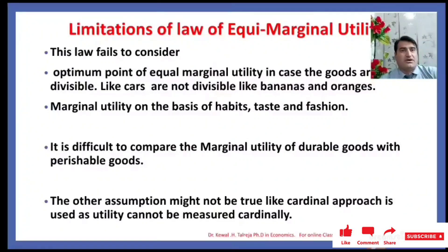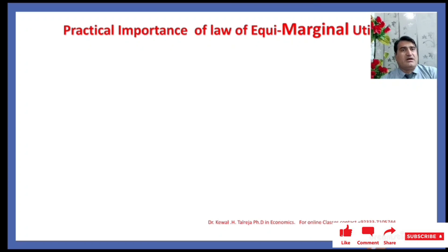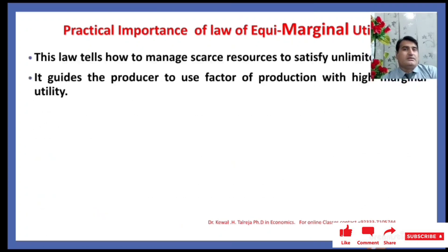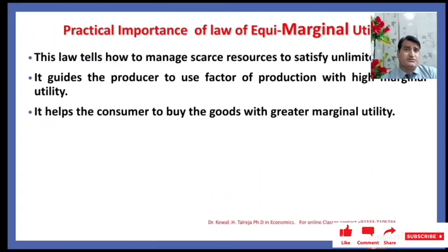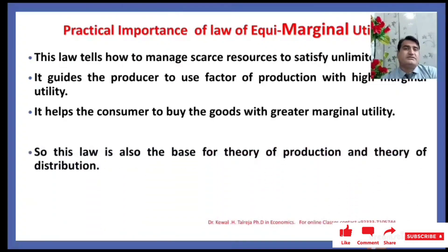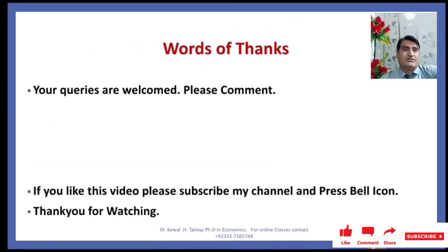The assumptions of this law may not always be true — for example, the cardinal approach is used, but utility cannot be measured cardinally. What is the practical importance of the Law of Equimarginal Utility? This law tells us how to manage scarce resources to satisfy unlimited wants. It guides the producer to use factors of production with high marginal utility and helps the consumer to buy goods with greater marginal utility. This law is also the base for the theory of production and theory of distribution — telling what to produce, where, how, and for whom to produce, and how much to allocate to land, labor, and capital.